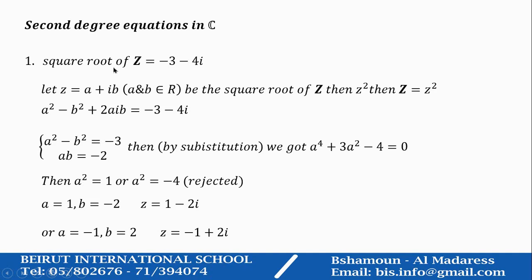So, being the square root of big Z, it means big Z equals z to power 2. You expand z to power 2. It is A squared minus B squared, because I squared is minus 1, plus 2AIB, equals big Z, which is minus 3 minus 4I. A squared minus B squared equals minus 3, and 2AIB equals minus 4I, which means AB equals minus 2.